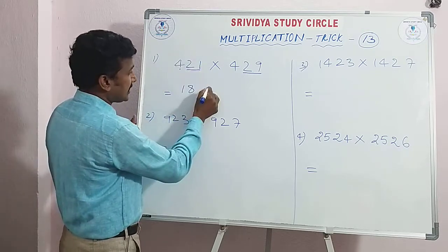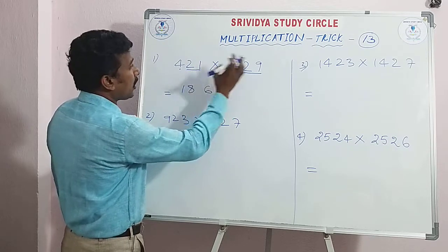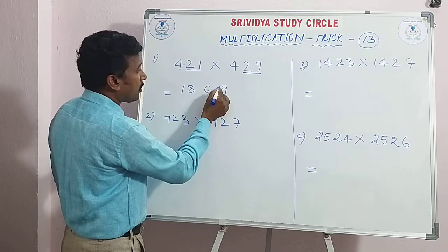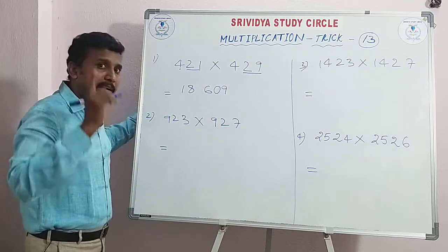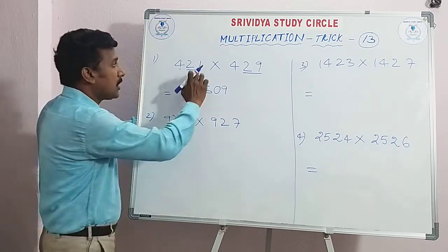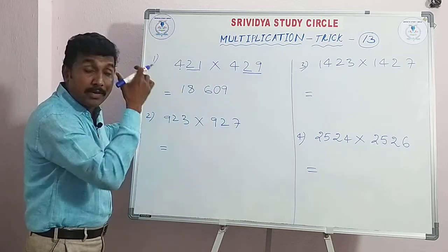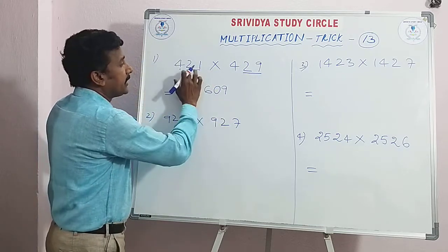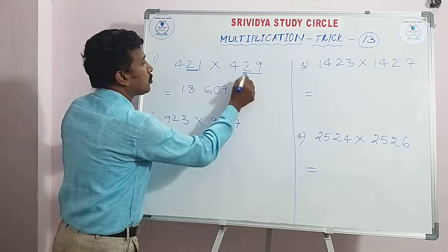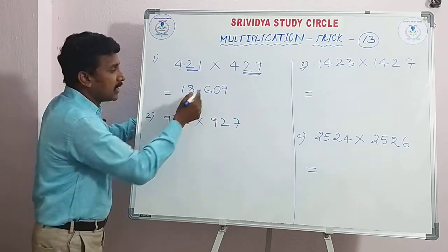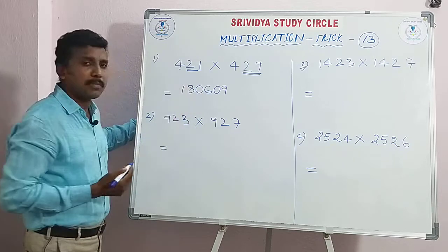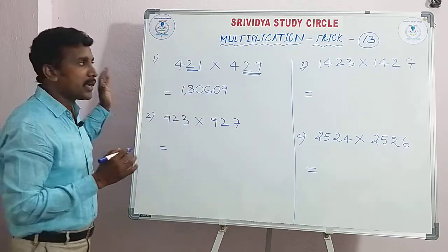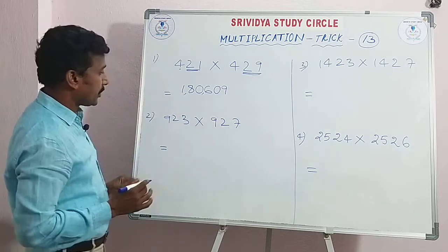Two threes are six, and one nine is nine. But nine is a single digit — we need the last two digits to be double digit, so put a zero: 09. Four digits total are needed, so we get the result. This method is very easy.